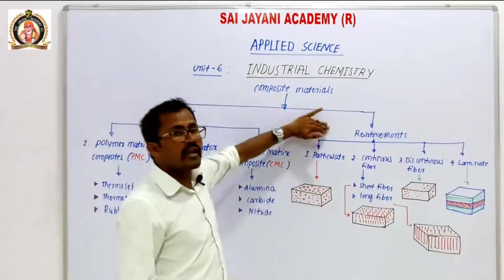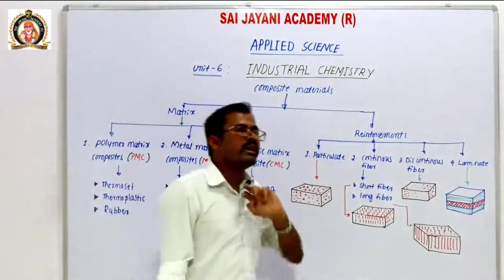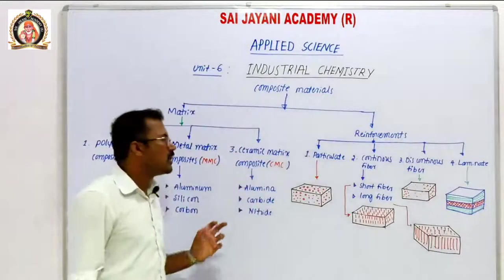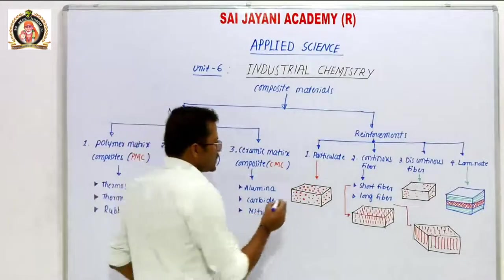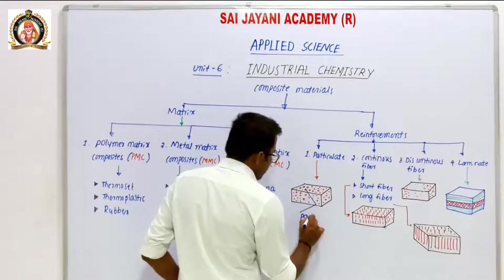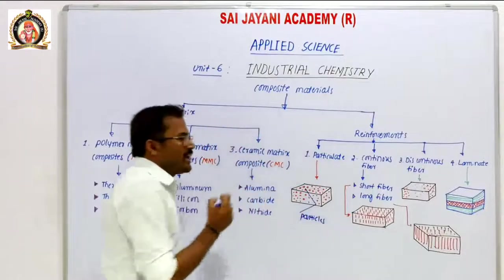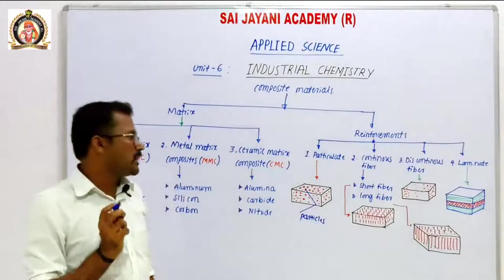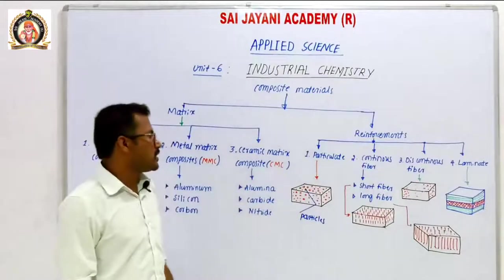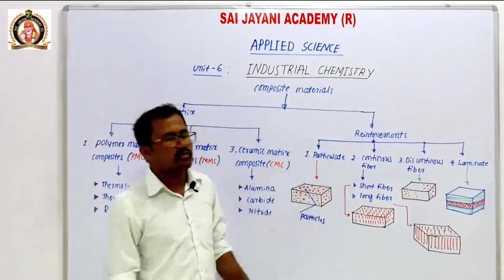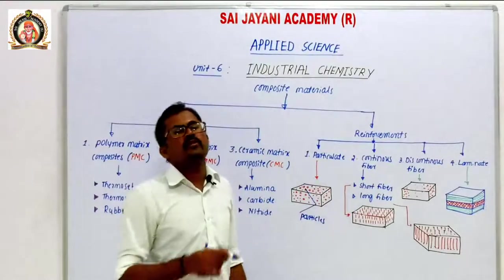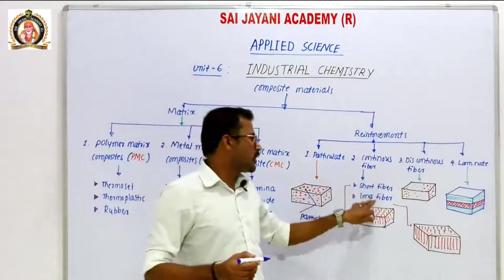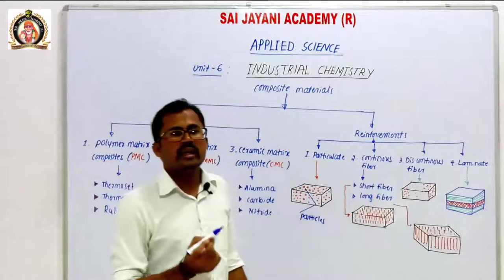Based on reinforcement, there are four types: particulate, continuous fiber, discontinuous fiber, and laminated. Particulate composite material has small particles as reinforcement — small powder or elemental particles dispersed in the matrix phase. Continuous fiber has two types: short fiber and long fiber, where small rods are inserted into the composite matrix.